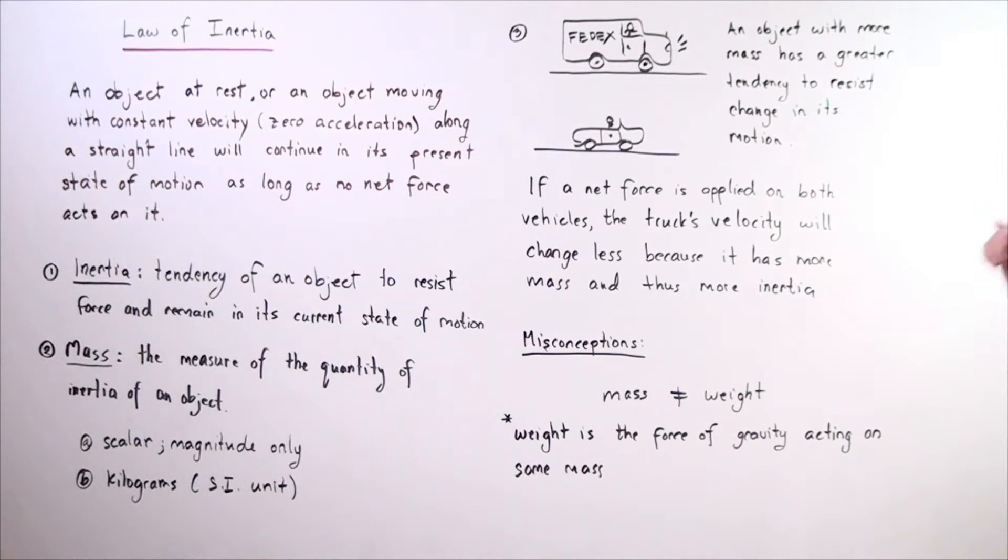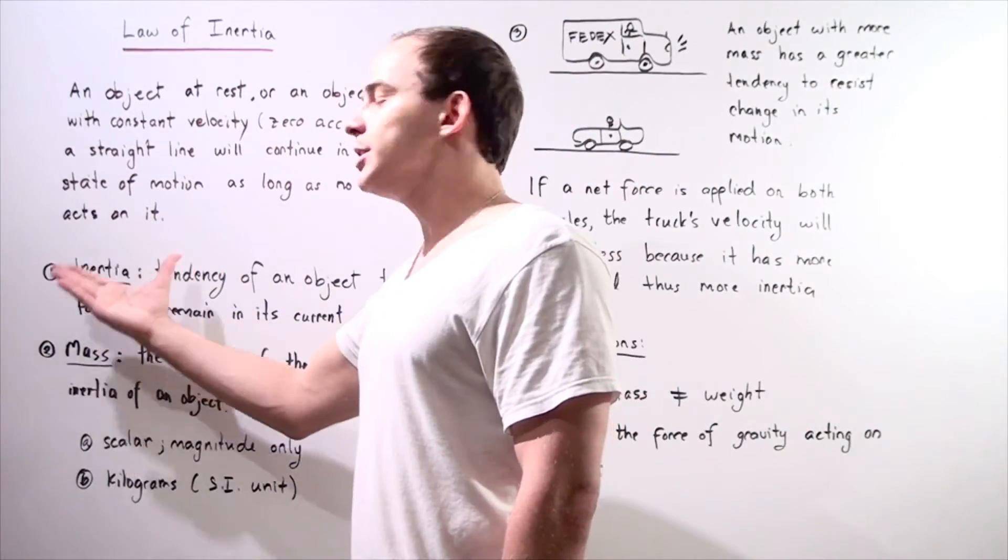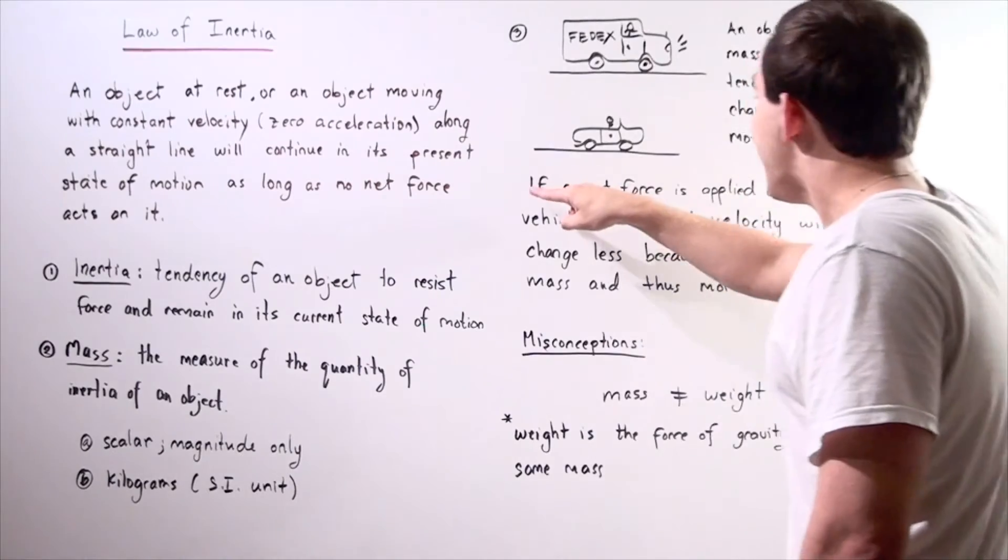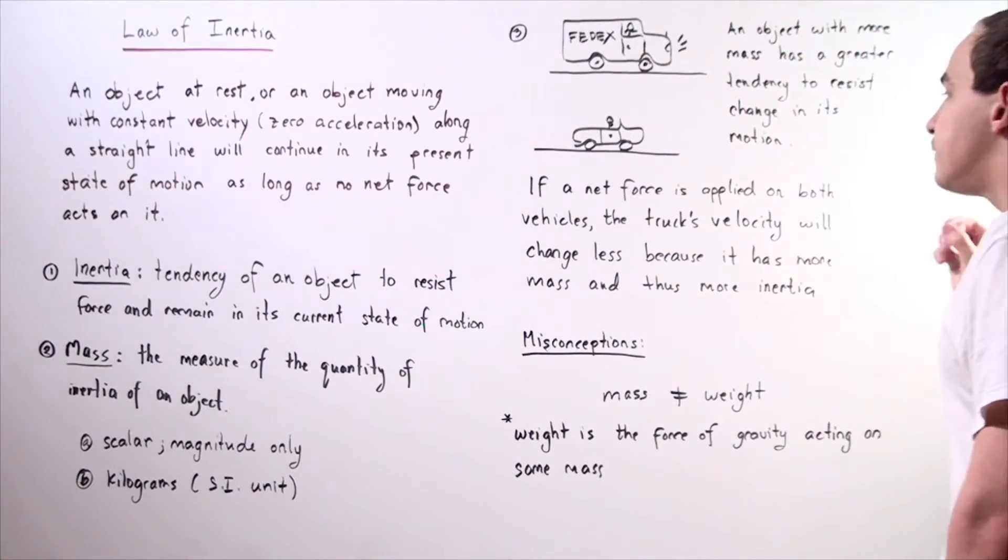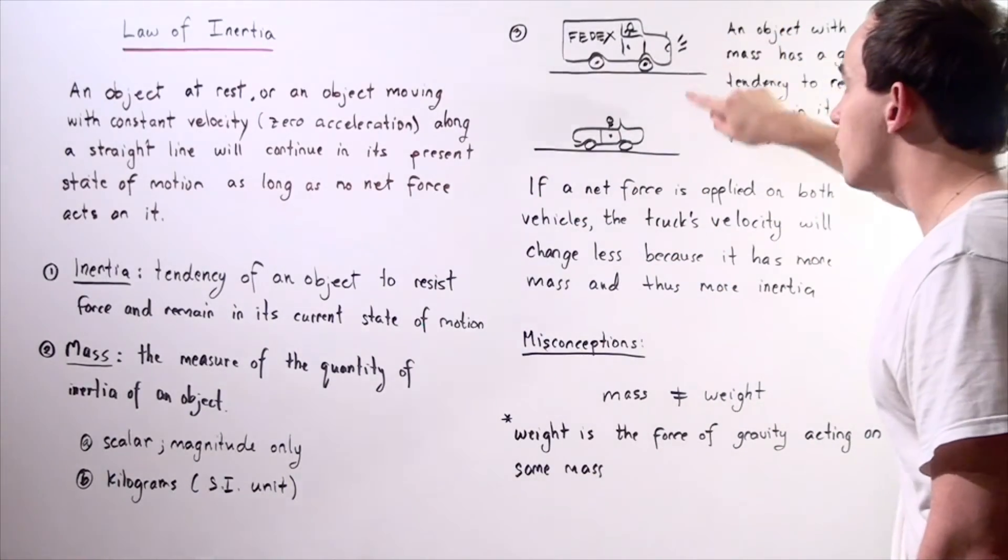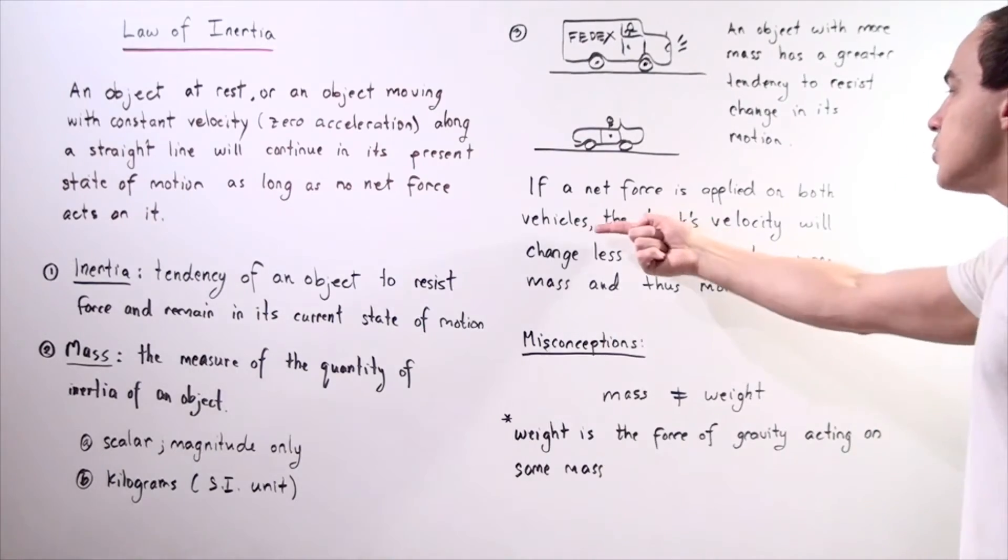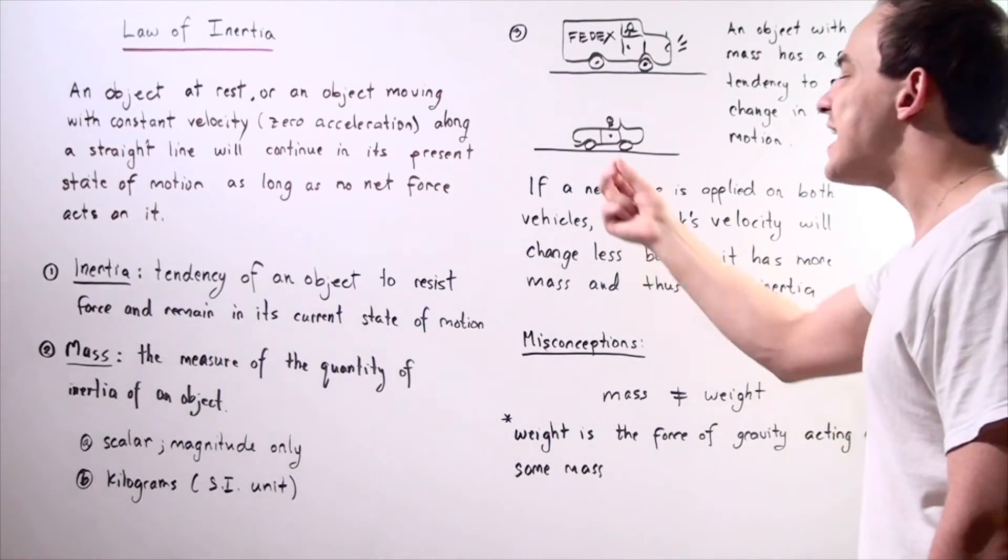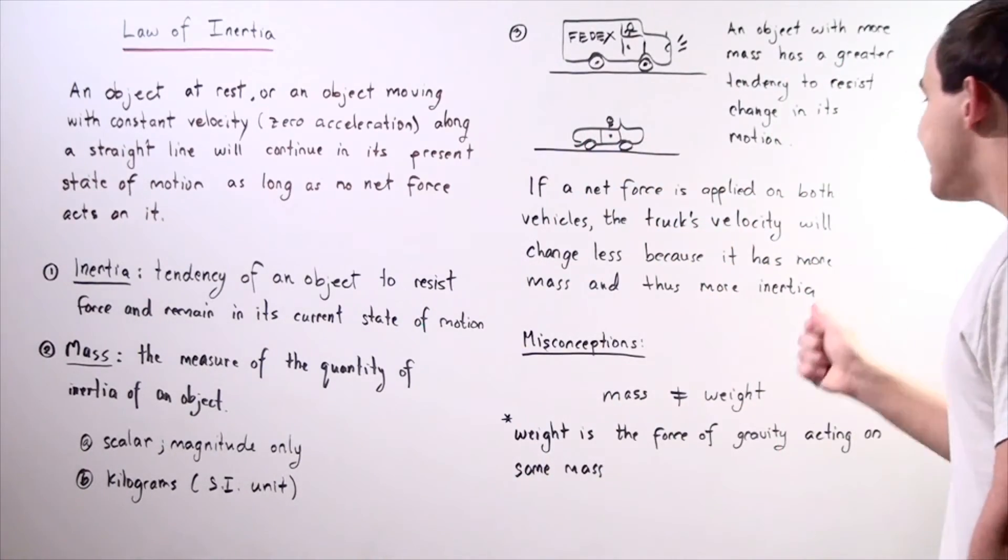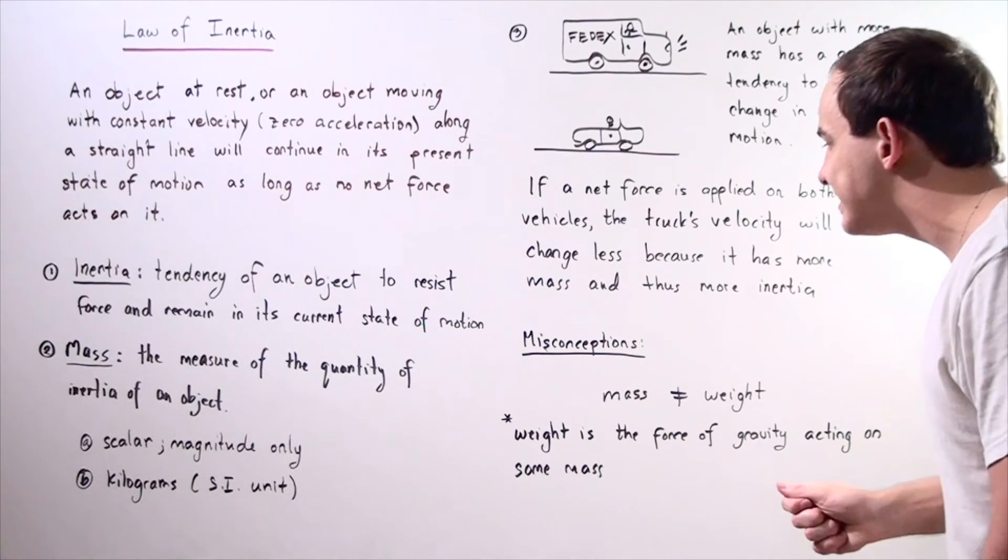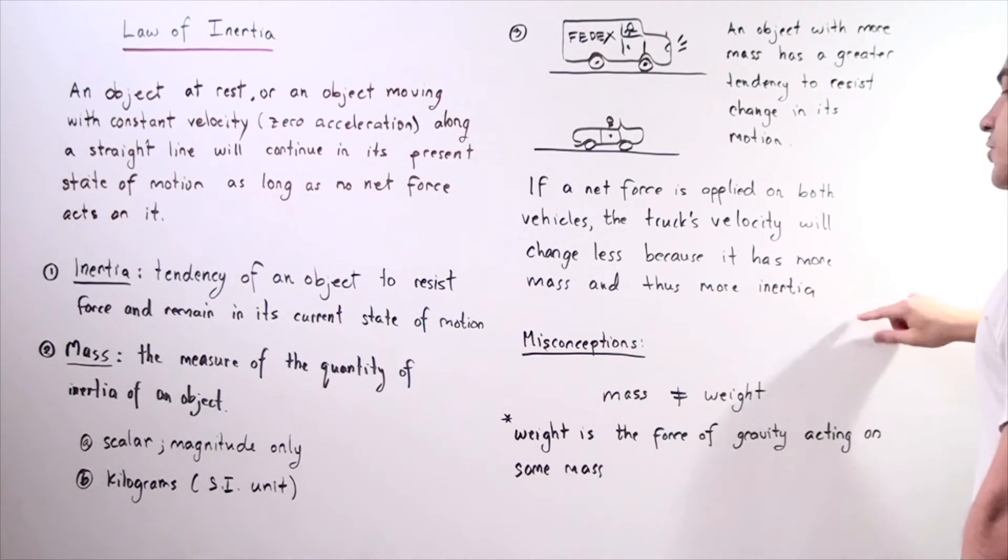Once again, an object with more mass has greater tendency to resist change in motion because it has greater inertia. If the same exact net force is applied to both of these vehicles, the truck's velocity will change less because it has greater mass and, therefore, greater inertia.